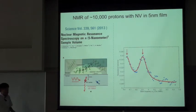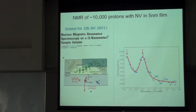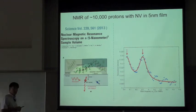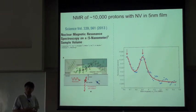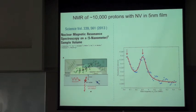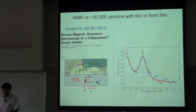Our first trial, performed at ETH in collaboration with Christian Degen's group, was to repeat the experiments published this year in Science by the Stuttgart group. We put emulsion oil on top of our sample, and indeed we have been able to detect proton nuclear spins in the emulsion oil. The number of nuclear spins we estimated is about 10,000. So our sample has the capability of detecting 10,000 protons. We are now trying to reduce the number of protons placed on such surface so that we can go down to 1,000, 100, 10, and eventually one proton, hopefully in a few years.